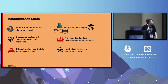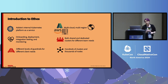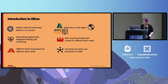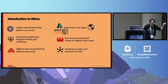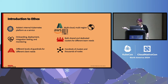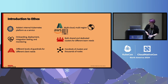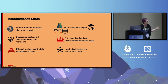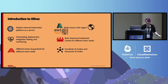Quick intro to Ethos. Ethos is Adobe's internal Kubernetes platform as a service. We cover onboarding, deployments, integration testing, monitoring, everything in between. We have different levels of guardrails for our different client needs, from just 'upload your container and we'll take care of the rest' to almost unfettered access to the Kubernetes ecosystem. We are multi-cloud and multi-region across Azure, AWS, data center, and all over the world. We offer both shared and dedicated clusters, and all of this is across hundreds of clusters and thousands of nodes. It's big.